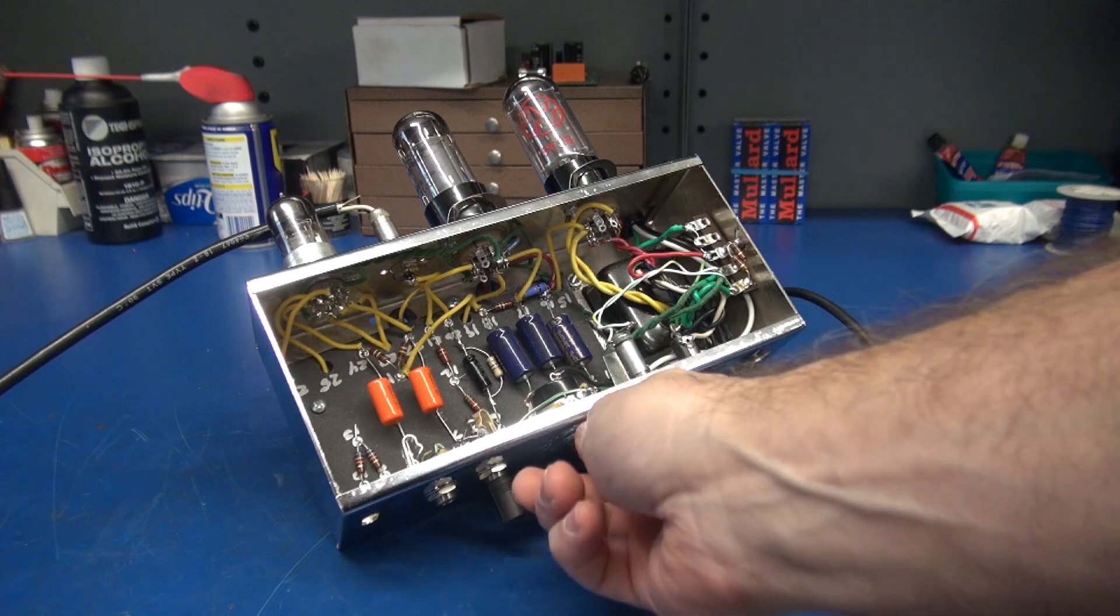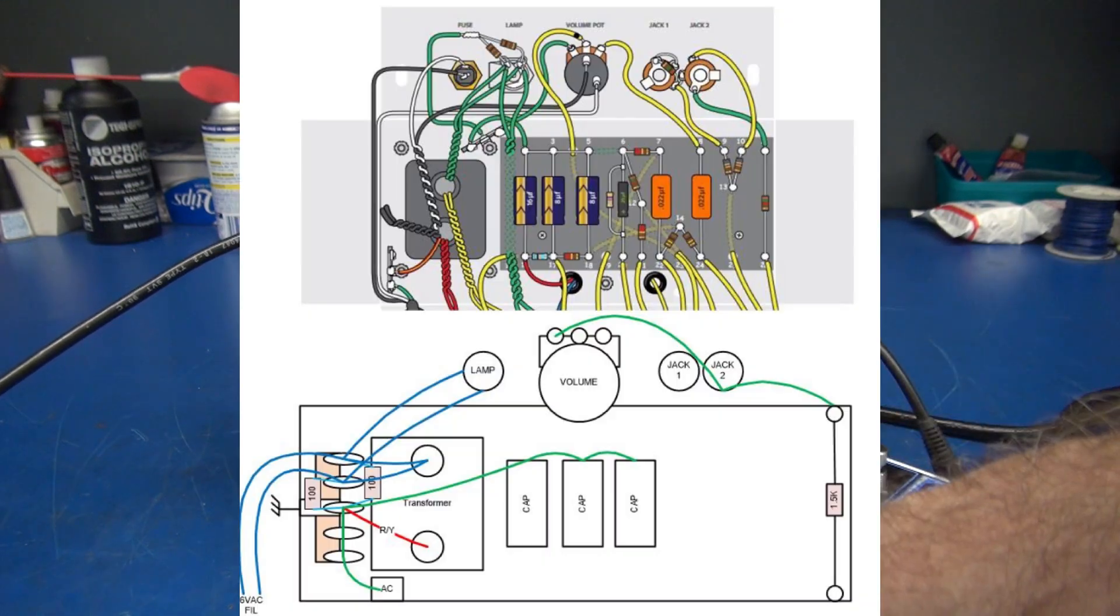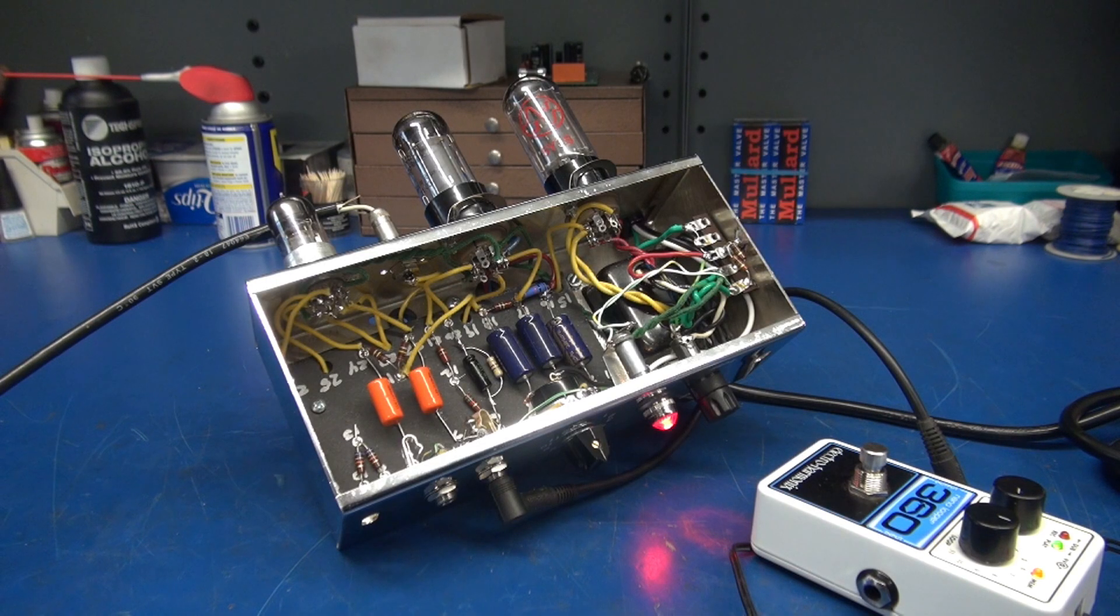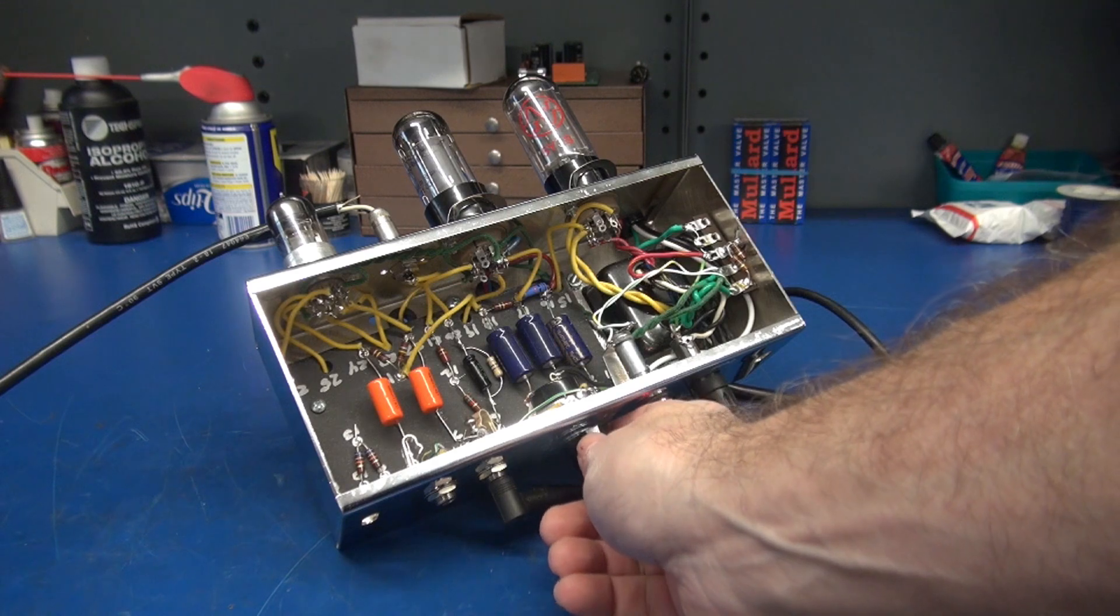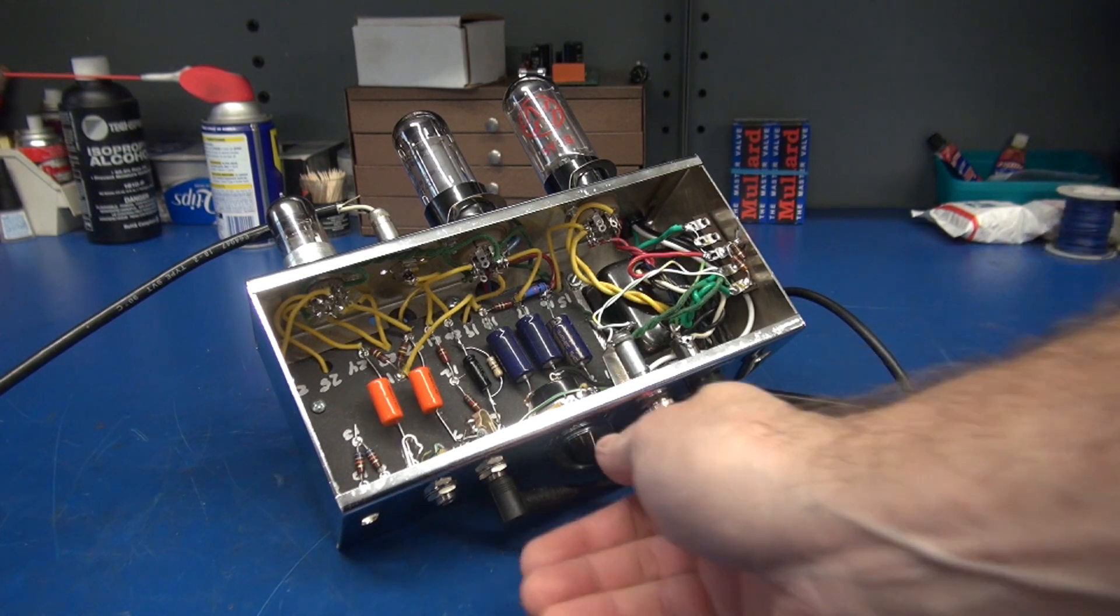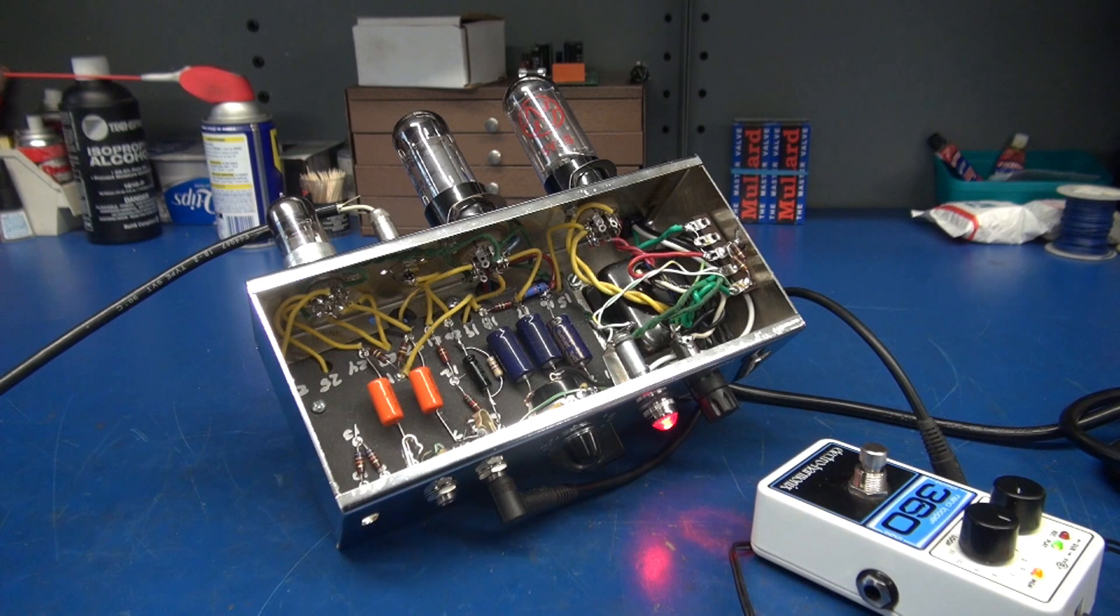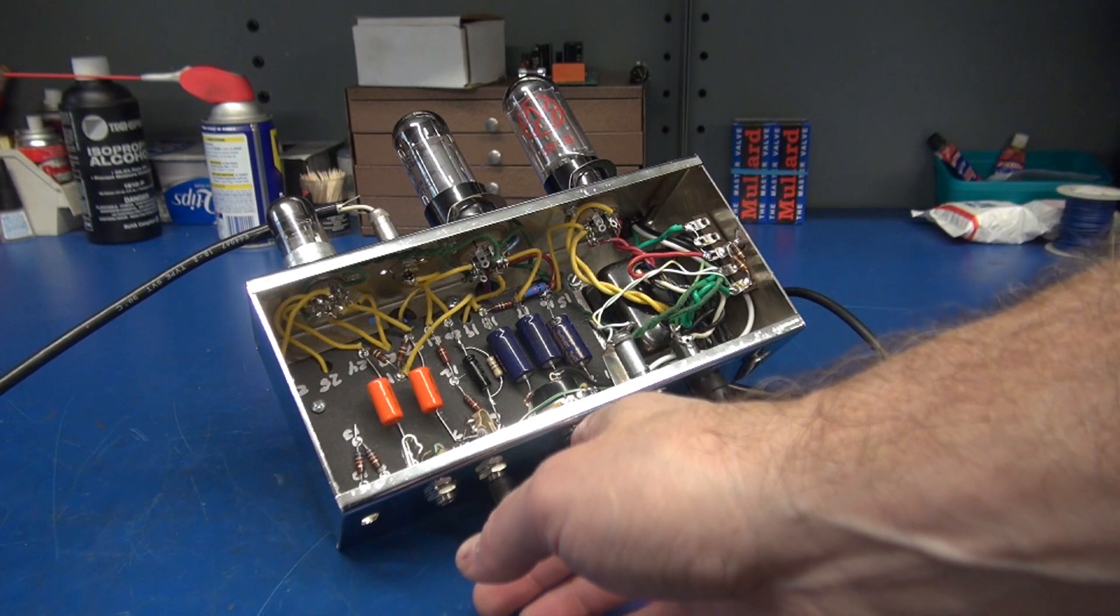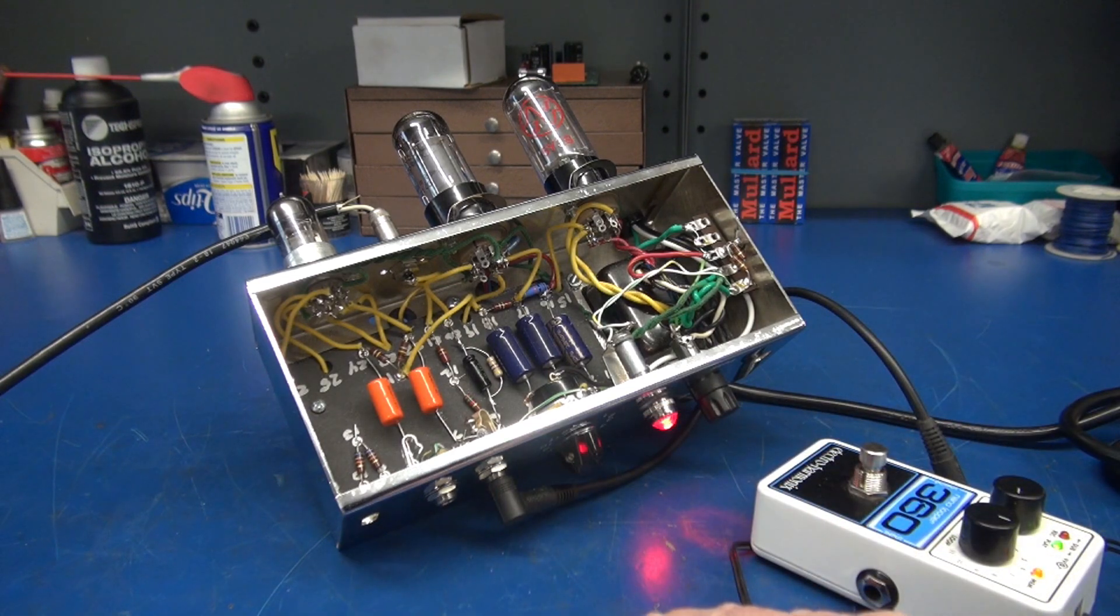Here we go using the looper as an input. Fire up the amp. Take a few seconds here to warm up. Hopefully we hear some audio. Here she comes. Of course in this model all you get is volume, but you can see she's working and she's quiet.